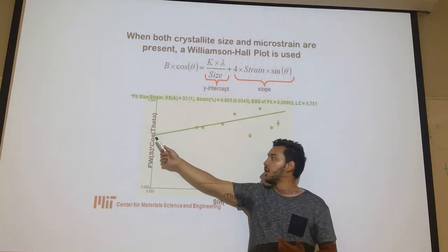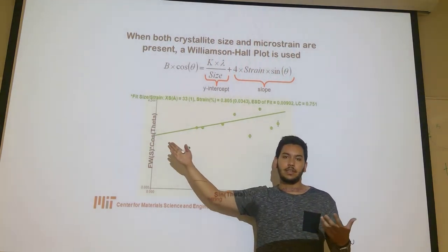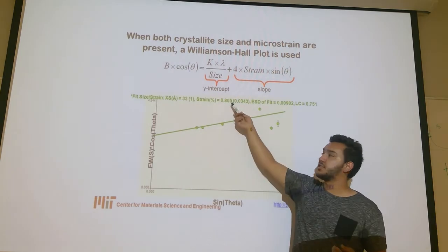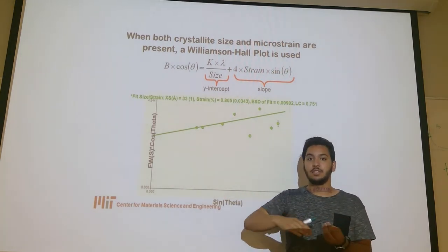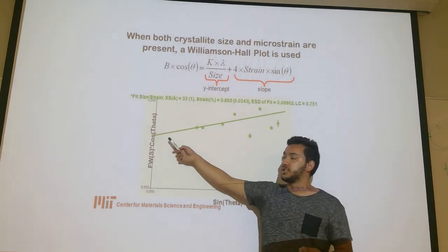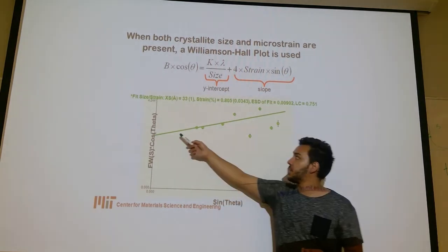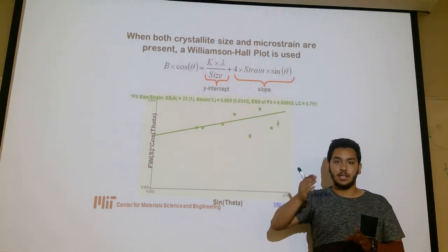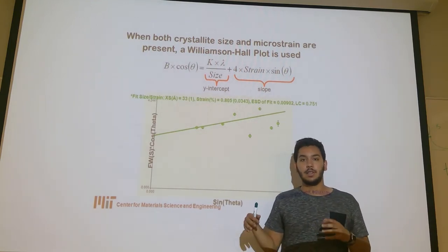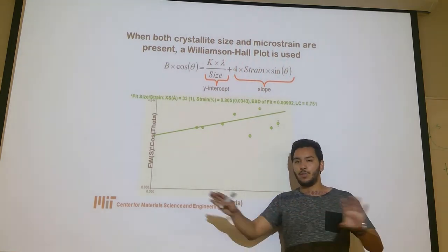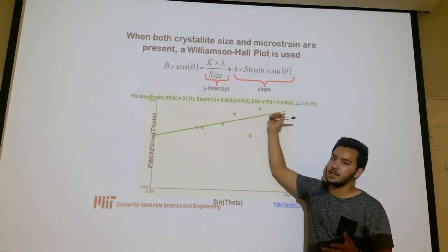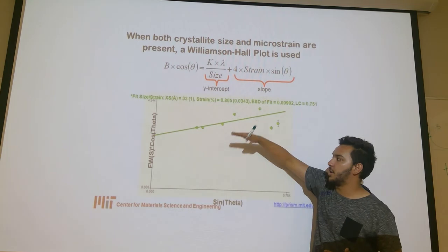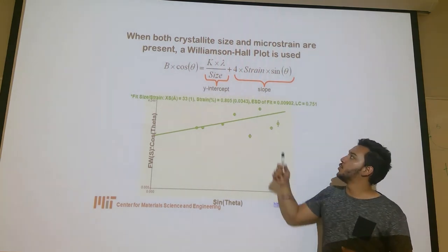Why is it the y-intercept? Because since the Scherrer equation talks about crystallite size, and this does not change with each of the planes, it's going to stay constant. However, something that does change when you look at different planes from different angles is the strain that there is throughout the whole solid. And that's why we have a line that has a certain slope and is not horizontal.